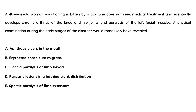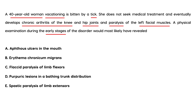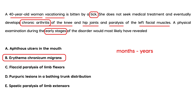Here's a clinical vignette: a 40-year-old woman vacationing is bitten by a tick. She does not seek medical treatment and eventually develops chronic arthritis of the knee and hip joints and paralysis of the left facial muscles. A physical exam during the early stages of the disorder would most likely have revealed — this is a classic vignette. The history of a tick bite with arthritis suggests she went untreated for months to years, since arthritis is a late presentation. What she would have had early on is the classic rash known as erythema migrans.